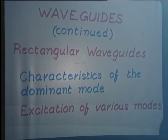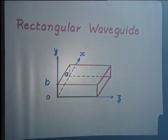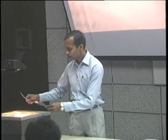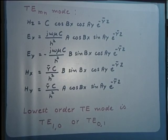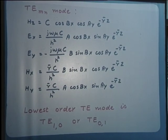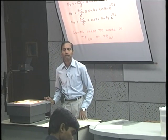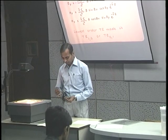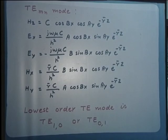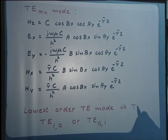Recalling the rectangular waveguide shown here, we have worked out the fields for the transverse magnetic modes and the transverse electric modes. The fields for the TEmn modes were worked out as shown here. We identified the lowest order mode as the TE10 mode by following the convention that the x-axis is oriented along the longer dimension of the cross-section of the waveguide.